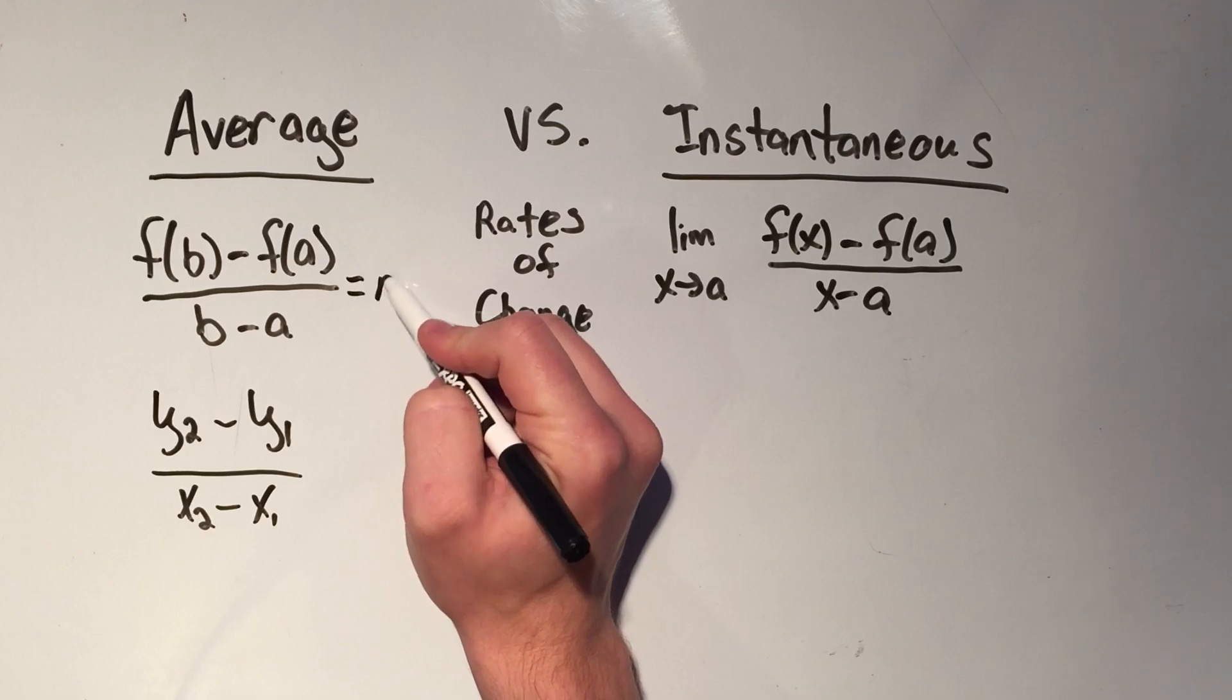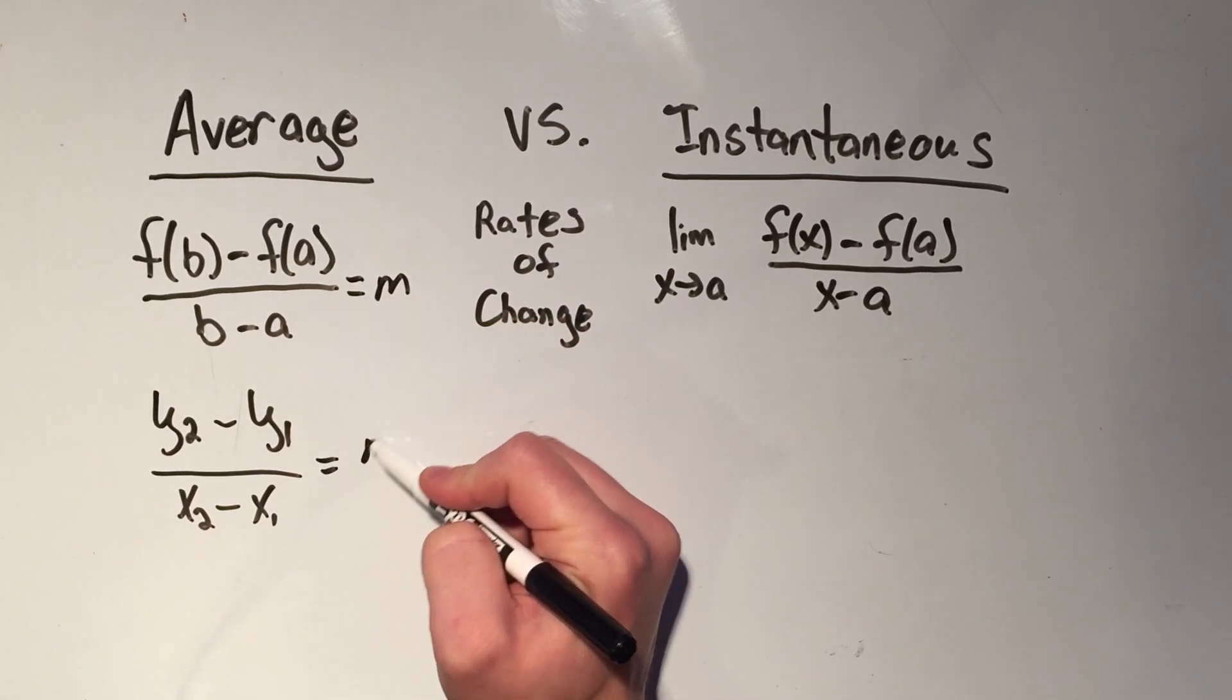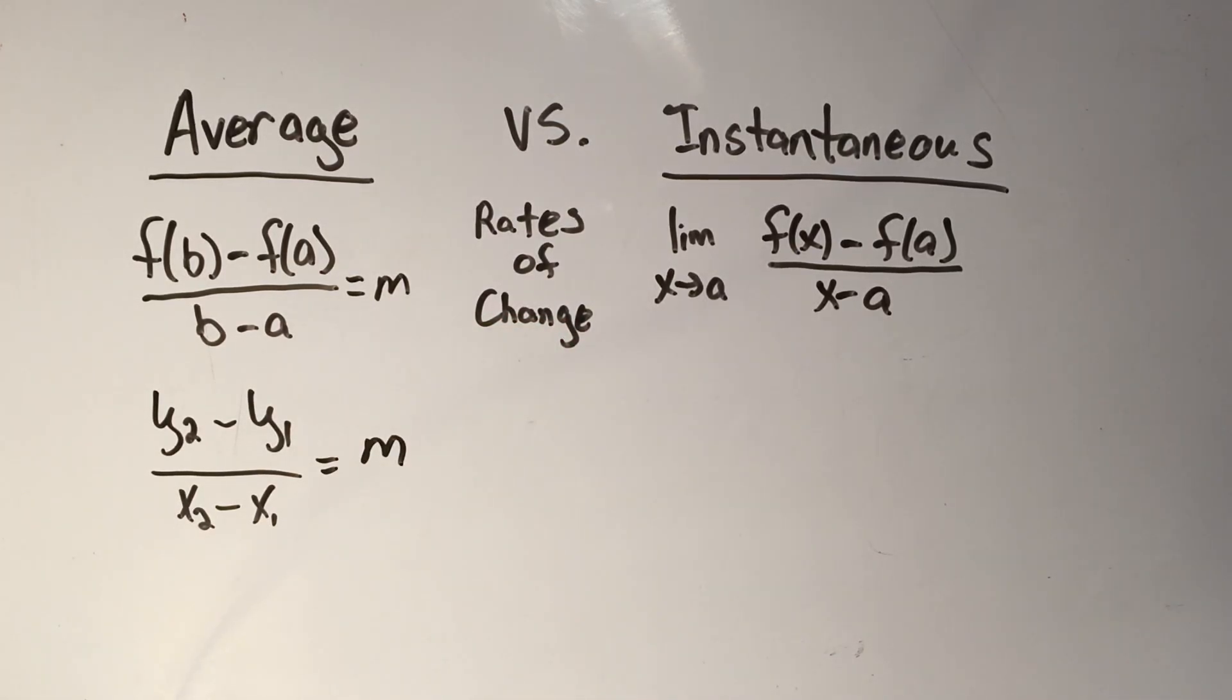And we know that to be the slope. So the average rate of change is just the slope between two different points.